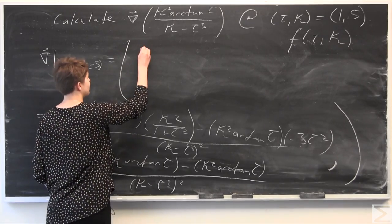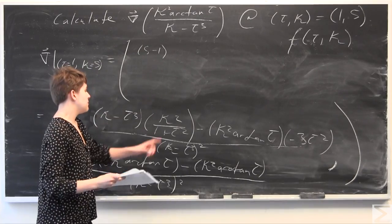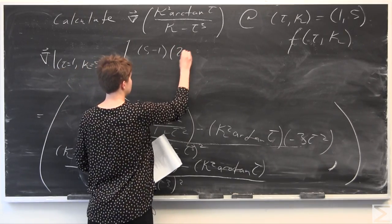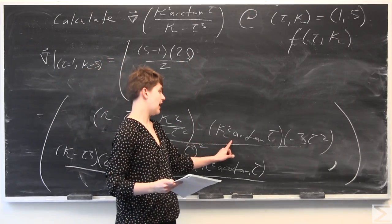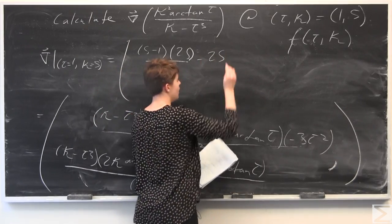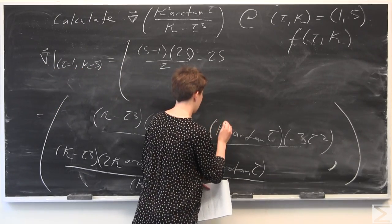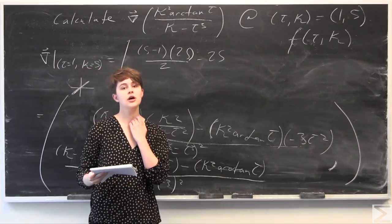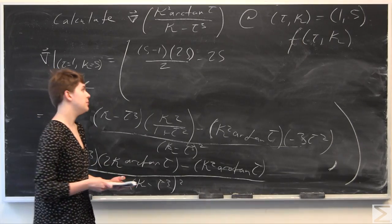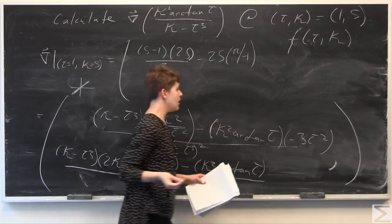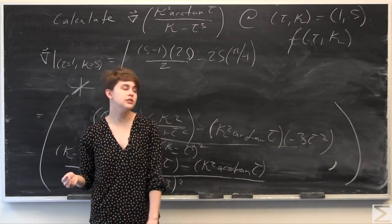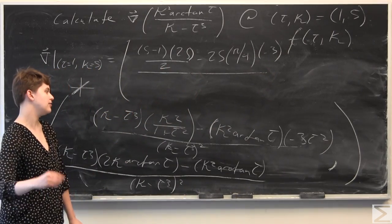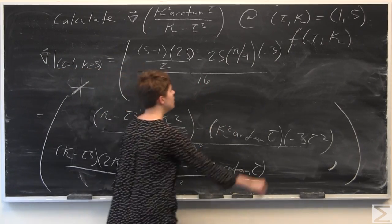For the first component: 5 minus 1 cubed — that's 5 minus 1, times 5 squared over 1 plus 1 squared, giving 25 over 2. Minus 25 times arctangent of 1. Arctangent of 1 is pi over 4, because sine and cosine are both root 2 over 2 at that angle. So we have 25 times pi over 4. For the negative 3 tau squared term, tau equals 1 gives negative 3. The denominator is kappa minus tau cubed: 5 minus 1 is 4, and 4 squared is 16.